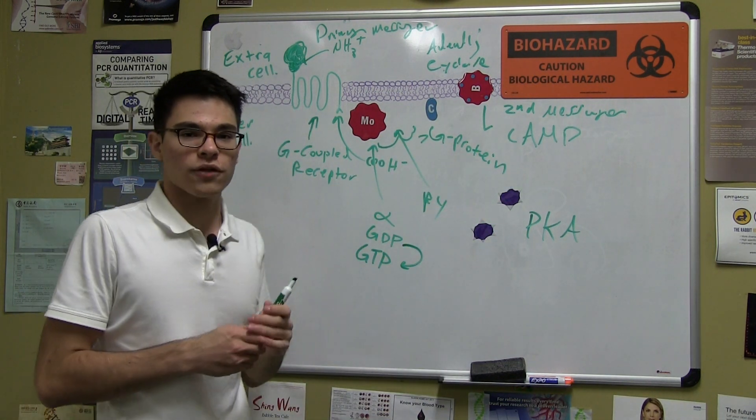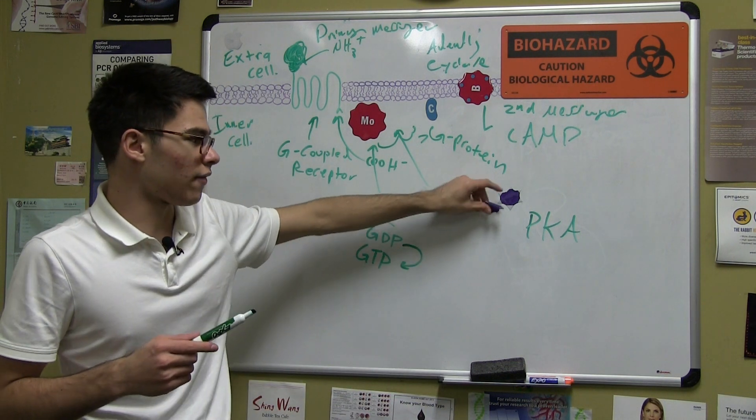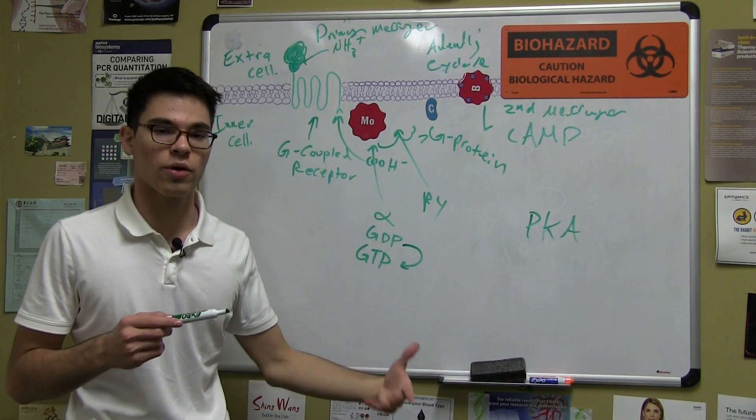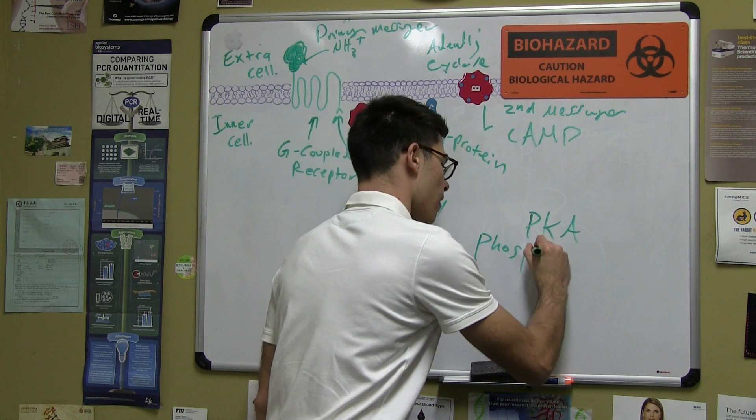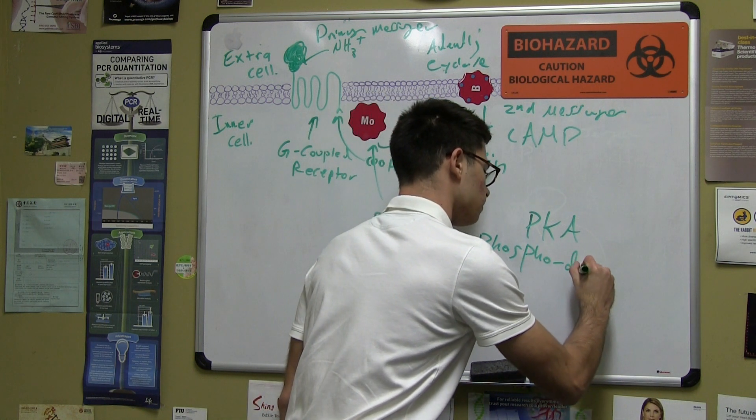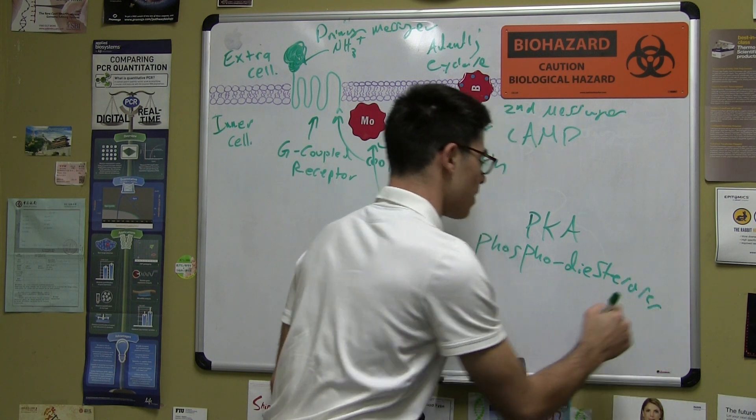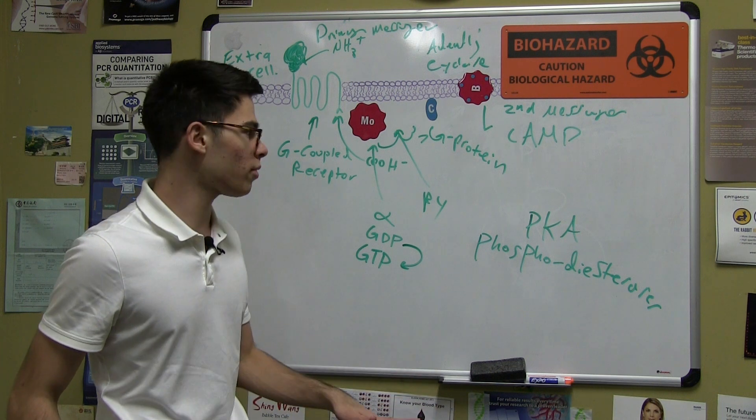Now of course you don't want the fight or flight response to go on forever. So how do we decrease the level of cyclic AMP and get that out of the cell so we don't keep transducing the signal? Well that's done with the help of a class of molecules called phosphodiesterases. So phosphodiesterases will help bring back the concentration of cyclic AMP in the cell to normal levels.